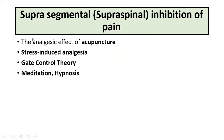This is also the basis of stress-induced analgesia. The limbic system is a seat of emotions; when stimulated, fibers from the limbic system supply the periaqueductal gray area. This explains why a soldier, when injured in the battlefield, may feel no pain during the battle.